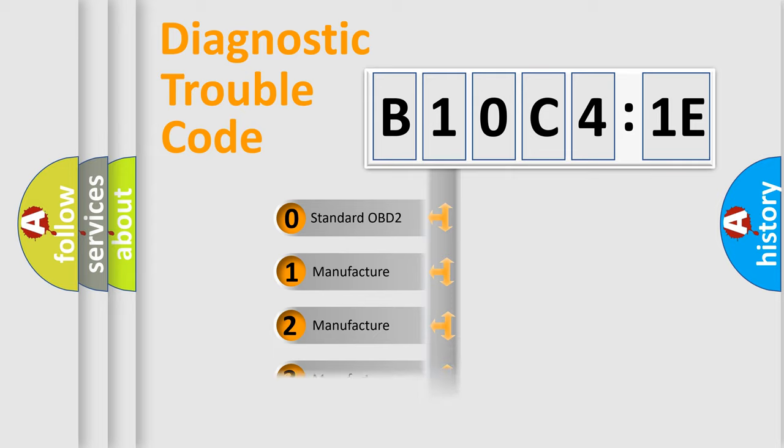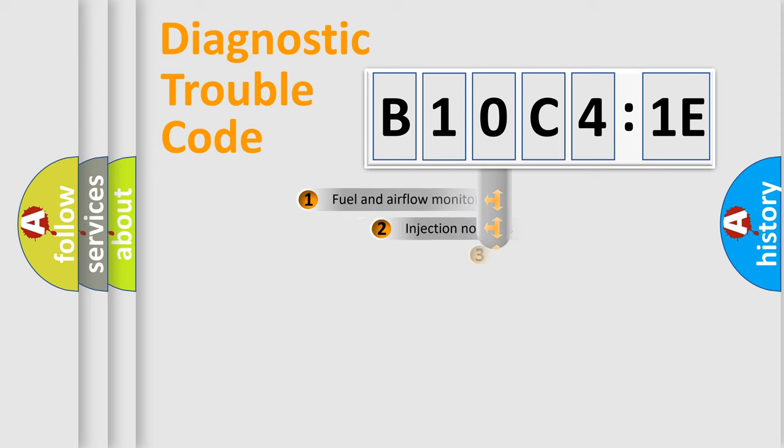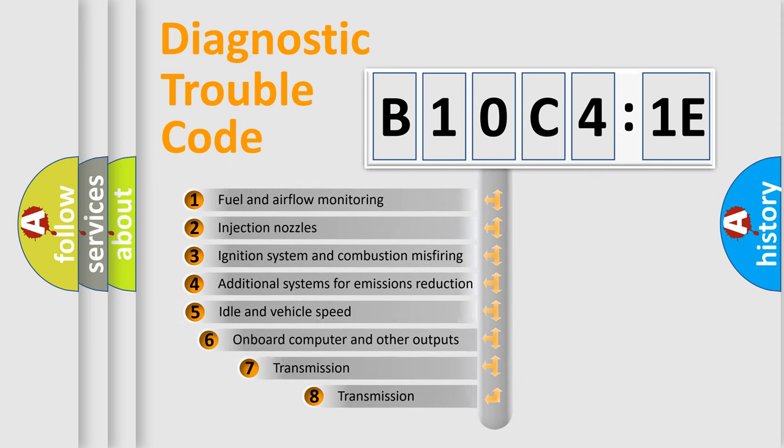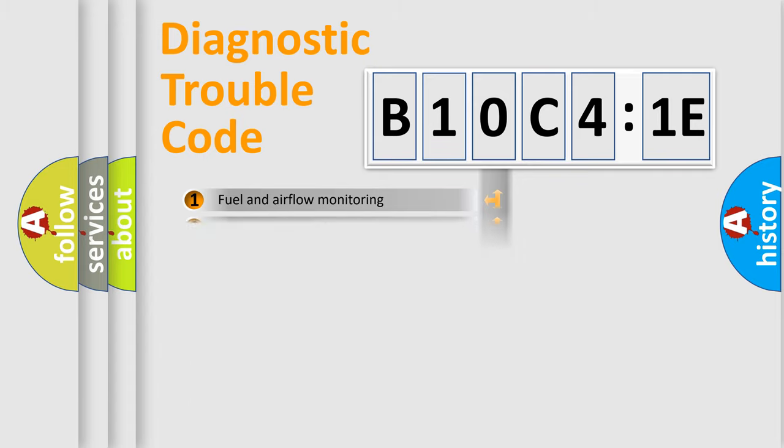Only the last two characters define the specific fault of the group. The add-on to the error code serves to specify the status in more detail, for example, a short to the ground. Let's not forget that such a division is valid only if the second character code is expressed by the number zero.